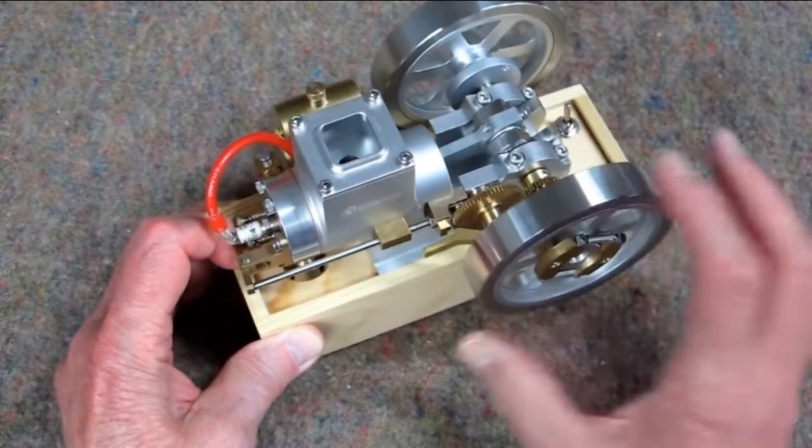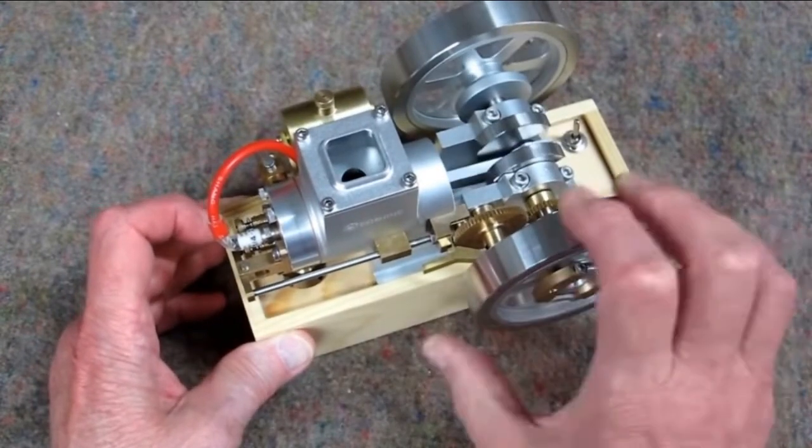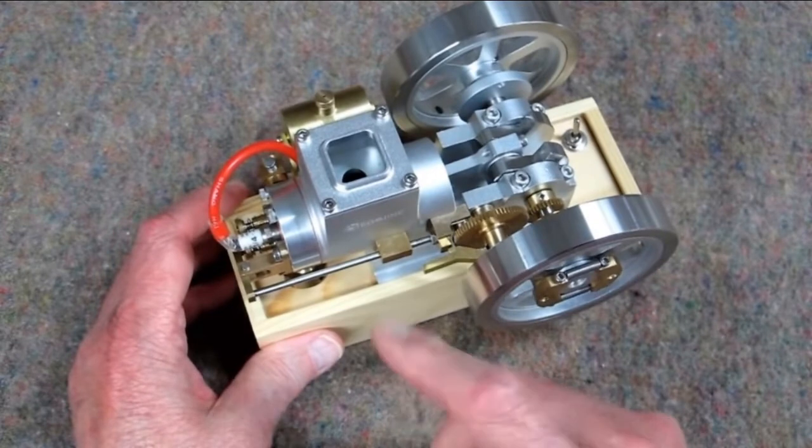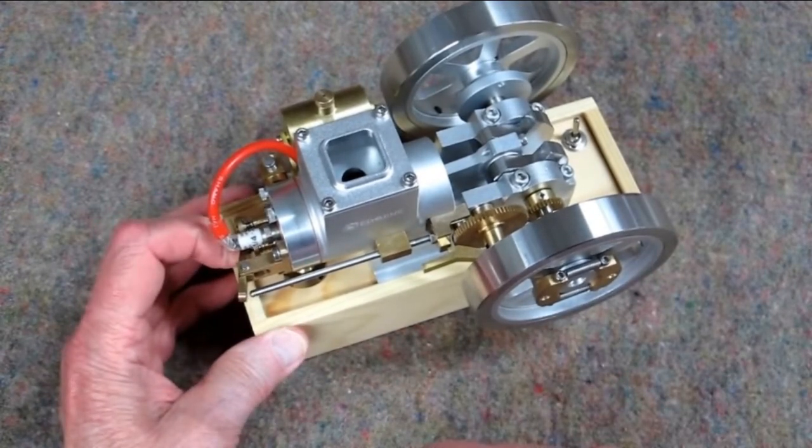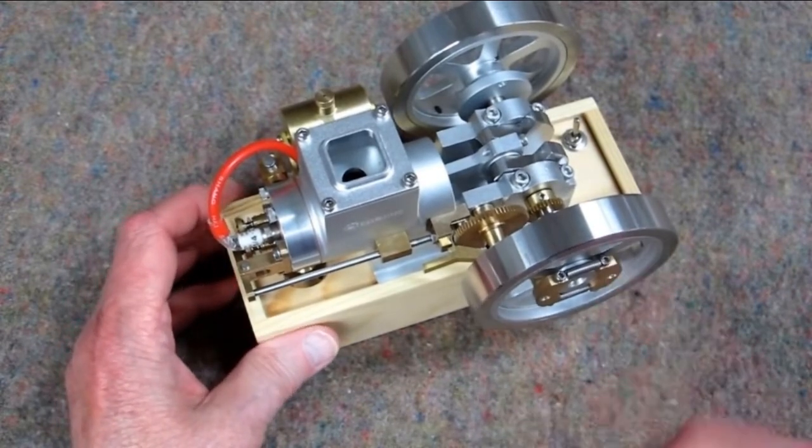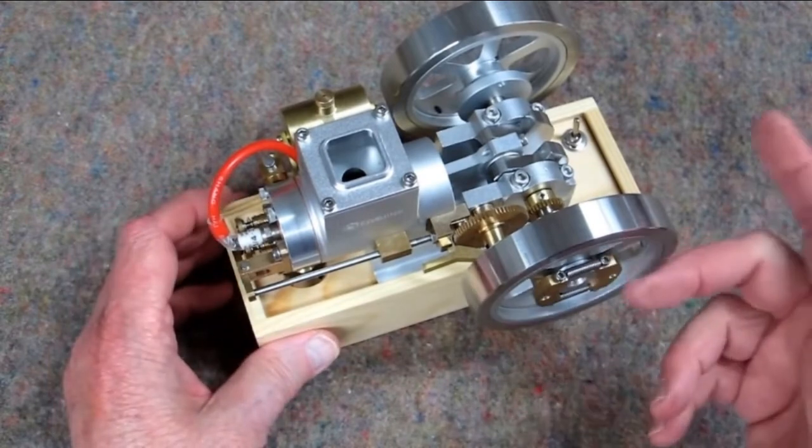Until it slows down, the governor starts to close and it allows the exhaust valve to function again. So occasionally it will fire to maintain momentum, then the exhaust valve is held open and it will coast until once again the exhaust valve is allowed to close. So hit and miss.